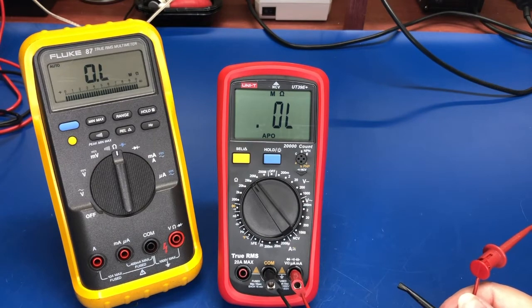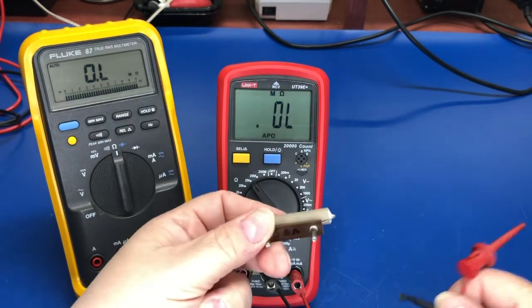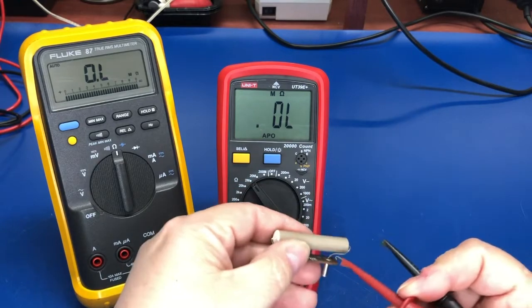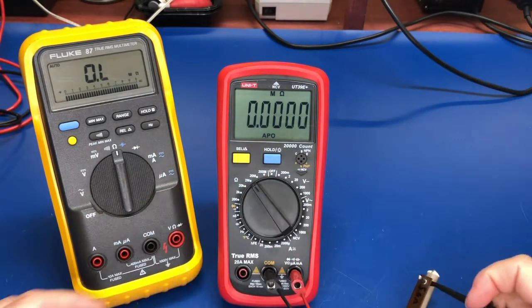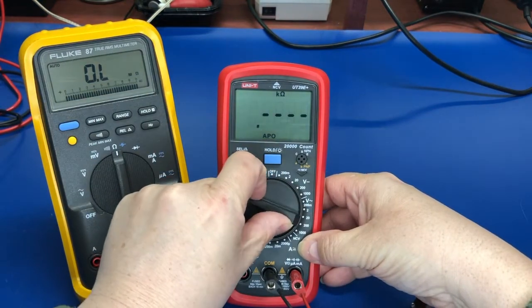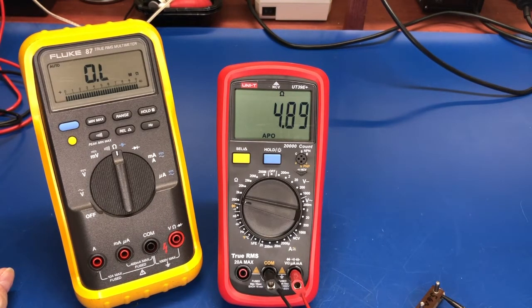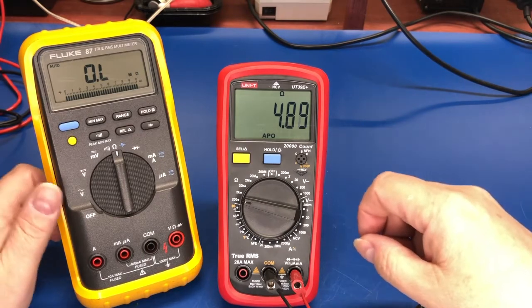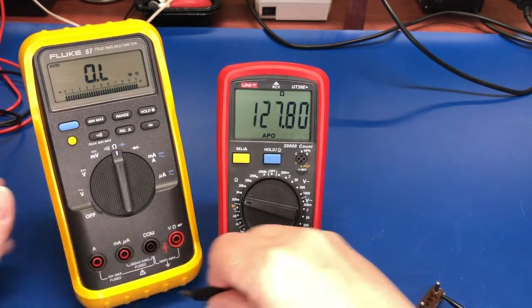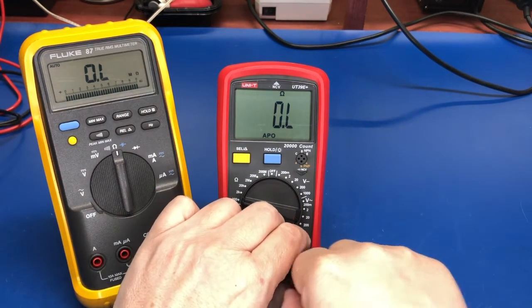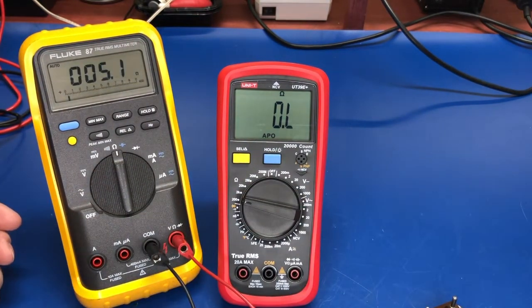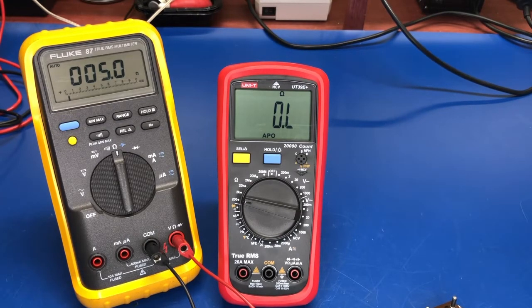And the last thing we'll test is we have an old wire-wound ceramic resistor. This is 5.6 ohms. And this is reading 4.88, 4.89, 4.9. Let's call it 4.9. Fluke 87, 5.0. Pretty good. Can't complain about that.